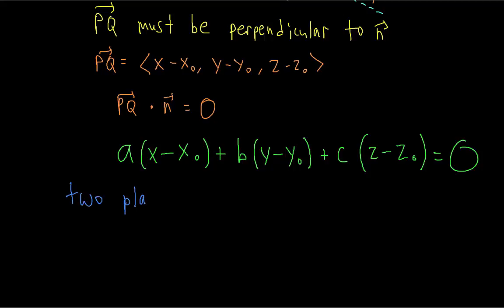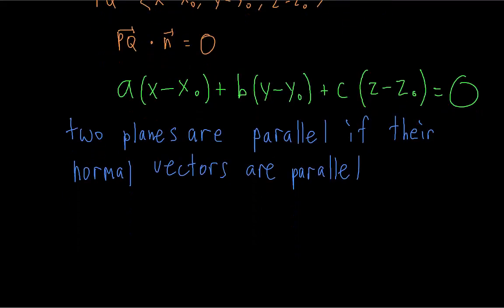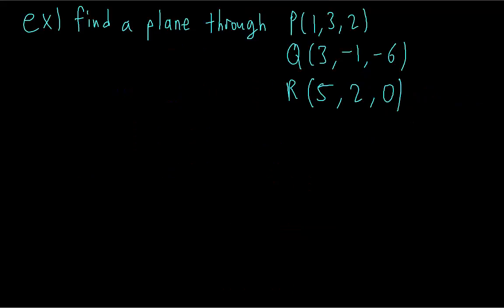One thing to note is that if two planes are parallel, that means their normal vectors are parallel. You can see that from the picture. Remember, the way to check if two vectors are parallel is if one of them is a scalar multiple of the other. That's basically all the theory associated with equations of planes, so now we're going to look at three different examples involving planes.